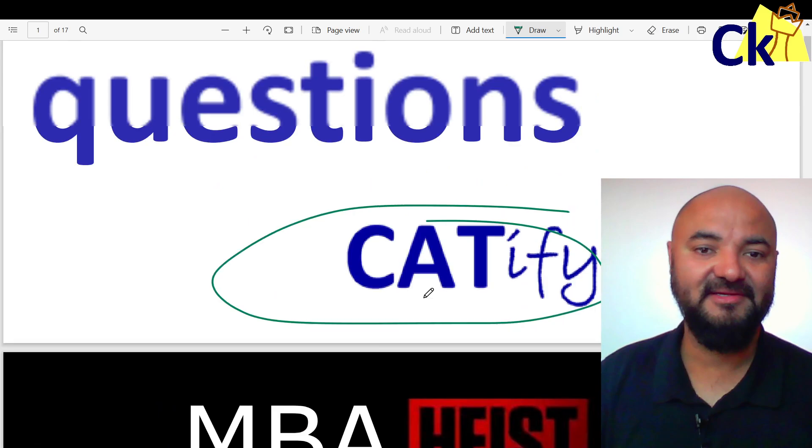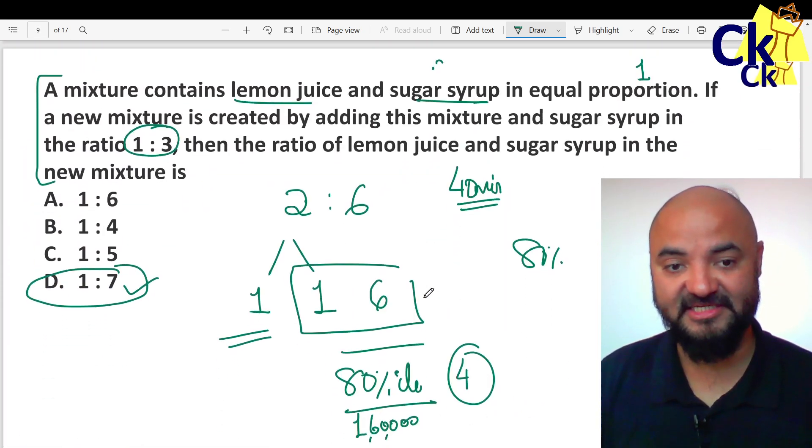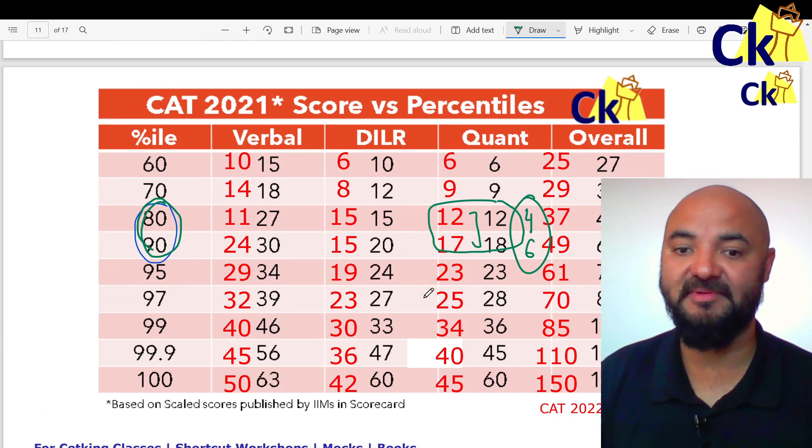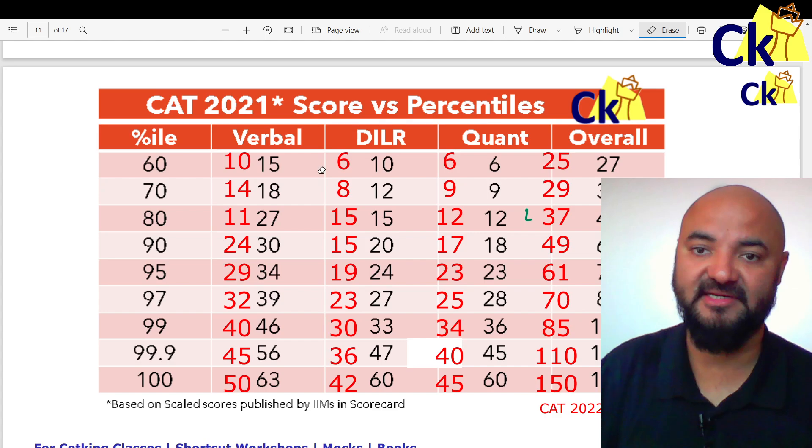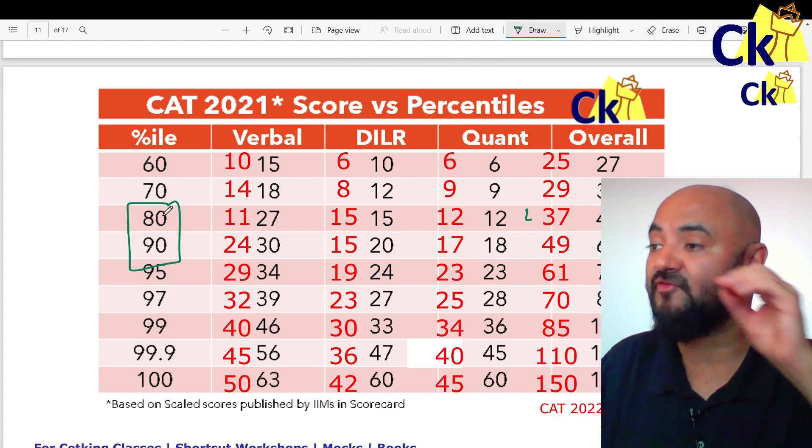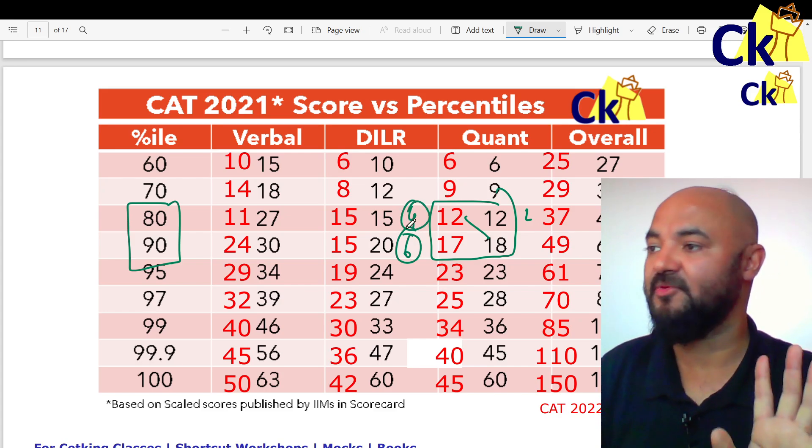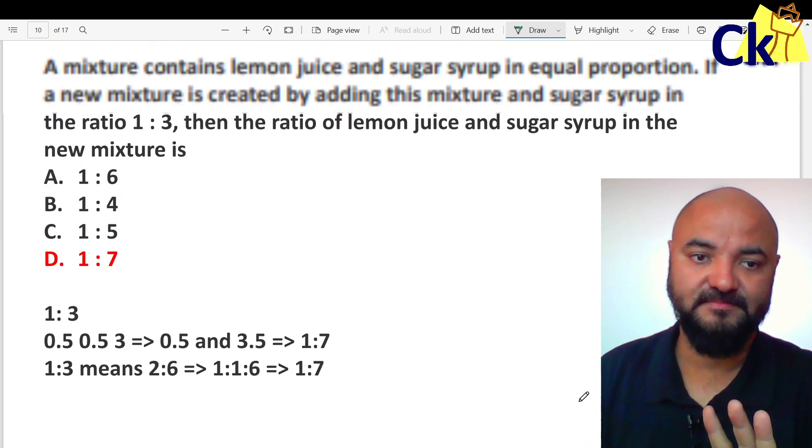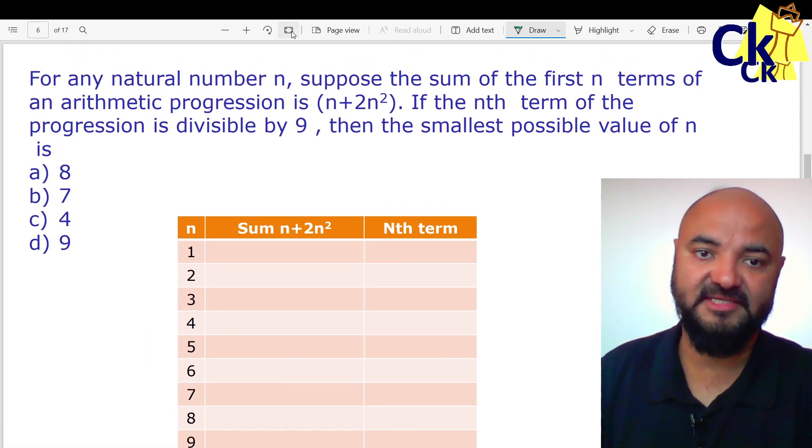For MBA programs, in the weak section - math or verbal, whichever is your weak section - my target is to cross 90 percentile, bring you to 80-90 percentile. You are killing the cutoff for all the IIMs. For that, in math I need 12 to 18 marks, maybe 4 to 6 questions. If I do correct, I am going to IIMs. I am getting a call from IIMs, of course depending upon how I perform in the other sections as well.